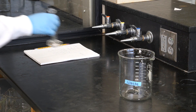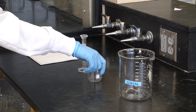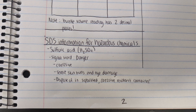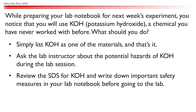It is also a good idea to note the important details in your lab notebook so you have them on hand while working. Keeping yourself informed is one of the best ways to ensure the safety of you and your fellow lab mates. While preparing your lab notebook for next week's experiments, you notice that you will use KOH, a chemical you have never worked with before. The best way to prepare is to start by reviewing its safety data sheet, which will help you get familiar with the chemical hazards and proper handling procedures before you even step into the lab.